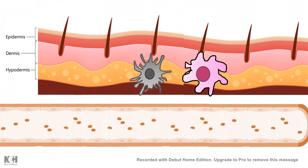Let's draw a portion of the skin. We have the epidermis, dermis, and hypodermis, and below that there are blood vessels and capillaries innervating all over the skin. For simplicity, the capillary is blown up and drawn as a large structure.